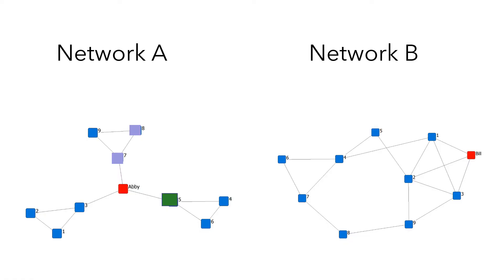An individual who can fill the structural holes, i.e. gaps or empty spaces, functions as a bridge between clusters. This individual has a structural advantage in the network. In network A, that individual is Abby. Abby's structural position in network A allows her to play a brokerage role, which is an advantage over other nodes in the network, because Abby can transfer or withhold valuable information from one cluster to another. Moreover, Abby can combine and integrate all information she receives from three different clusters and come up with the most innovative idea in network A.